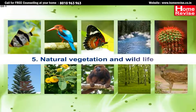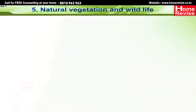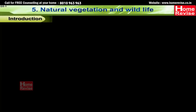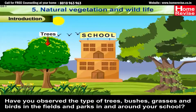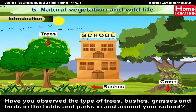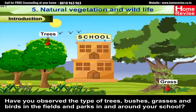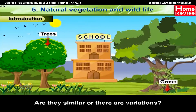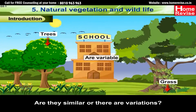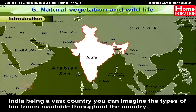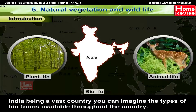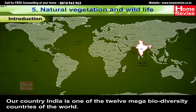Chapter 5: Natural Vegetation and Wildlife. Introduction — have you observed the types of trees, bushes, grasses, and birds in the fields and parks in and around your school? Are they similar, or are there variations? India, being a vast country, has an enormous variety of bioforms. Our country India is one of the 12 mega biodiversity countries of the world.